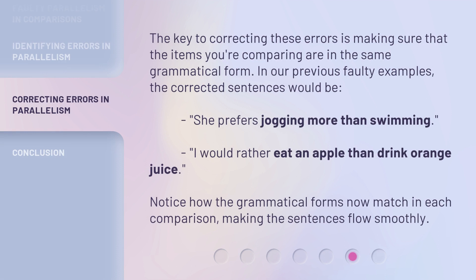The key to correcting these errors is making sure that the items you're comparing are in the same grammatical form. In our previous faulty examples, the corrected sentences would be: 'She prefers jogging more than swimming.' 'I would rather eat an apple than drink orange juice.' Notice how the grammatical forms now match in each comparison, making the sentences flow smoothly.